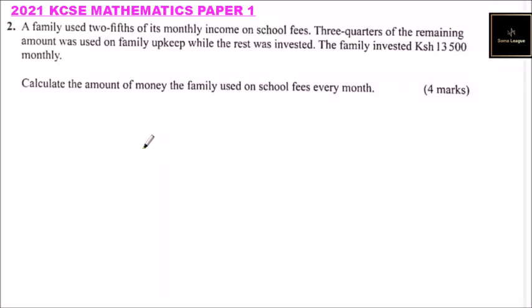Question number two. A family used two-fifths of its monthly income on school fees. Three quarters of the remaining amount was used on family upkeep where the rest was invested. The family invested 13,500 Kenyan shillings monthly. Calculate the amount of money the family used on school fees every month. You get four marks.